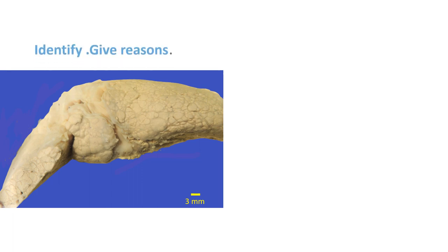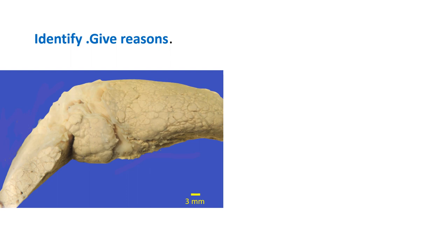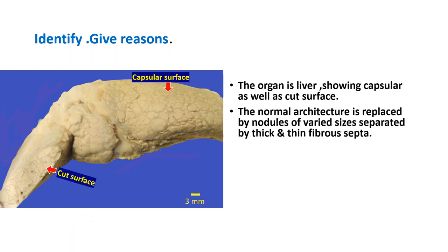This is the liver showing both the capsular surface and the cut surface. The normal appearance of the liver is lost and replaced by nodules raised above the surface. The nodules are of variable sizes and shapes, separated by thin fibrous septa. On the surface, the nodules appear slightly elevated above the capsular surface, and on cut surface they look like this. The size of the nodules is significant for classification of this condition.